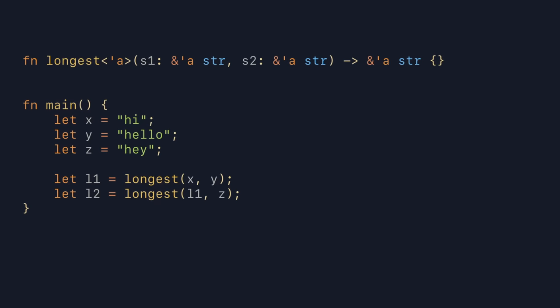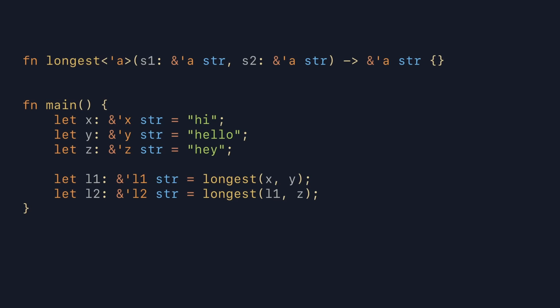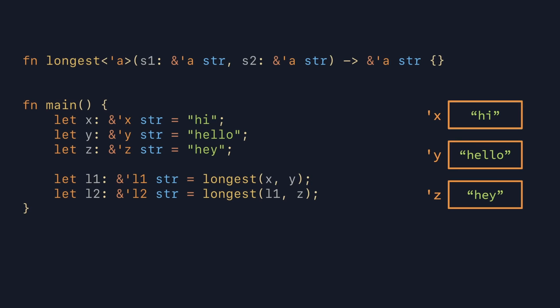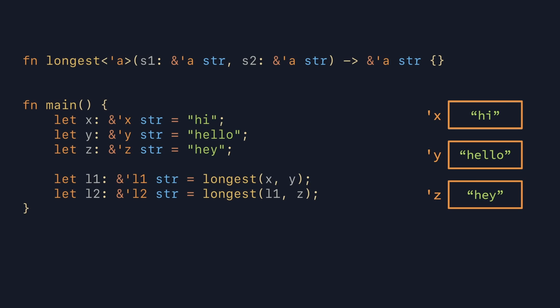Let's illustrate this with the function 'longest', which just returns the longest one of two strings. Let's think of 'tick A' as some region of memory — note that it doesn't necessarily have to be contiguous. What this function signature is saying is that the function takes two strings that both live somewhere in this region of memory 'tick A', and the function returns some reference into the same region. Now let's see what using this function looks like. We have three variables x, y, and z pointing to the strings 'hi', 'hello', and 'hey'. Below, we compute the longest one of those strings. Now all of these variables are references, so they all have a region, or lifetime. Looking at the definition of longest, it may at first seem like all references involved need to have the same region, because in the signature they all use 'tick A'.